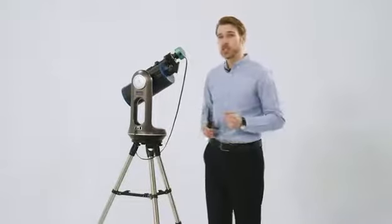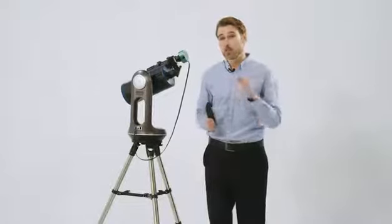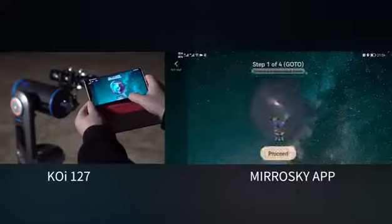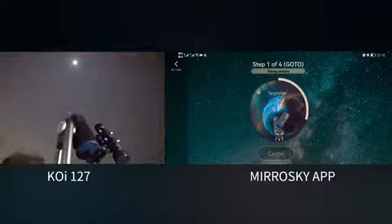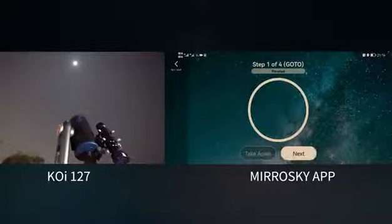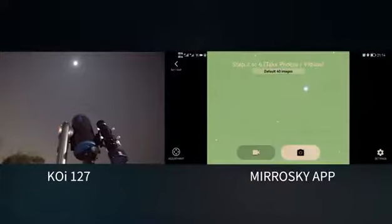But KOI 127 can observe its target in merely a few steps with the Smart Align technology. After connecting MirrorSky app with KOI 127, please tap a fixed star that rises from the horizon at the star map interface. Then tap GoTo. Then KOI 127 will automatically complete star calibration.